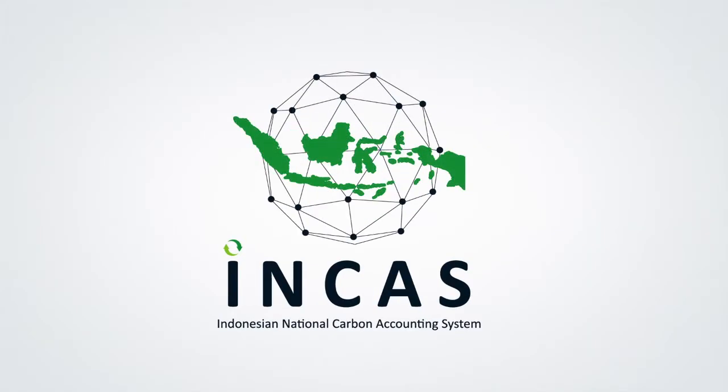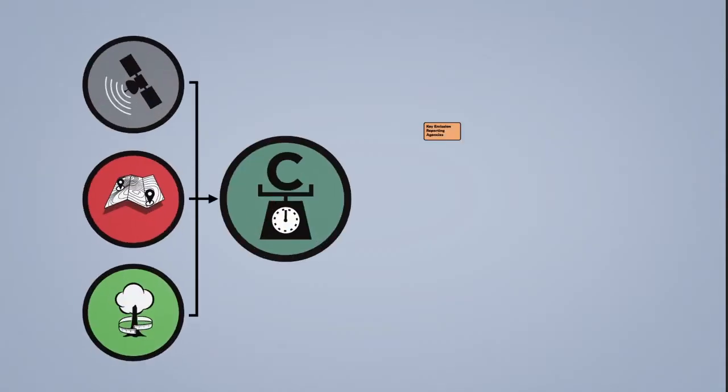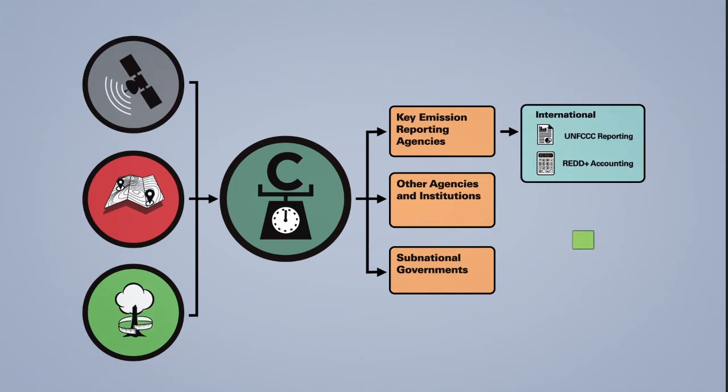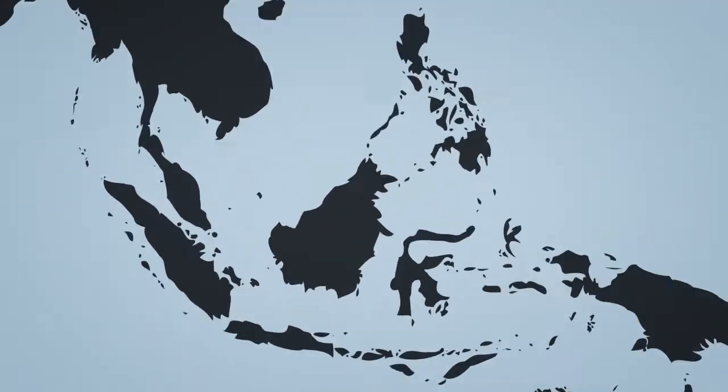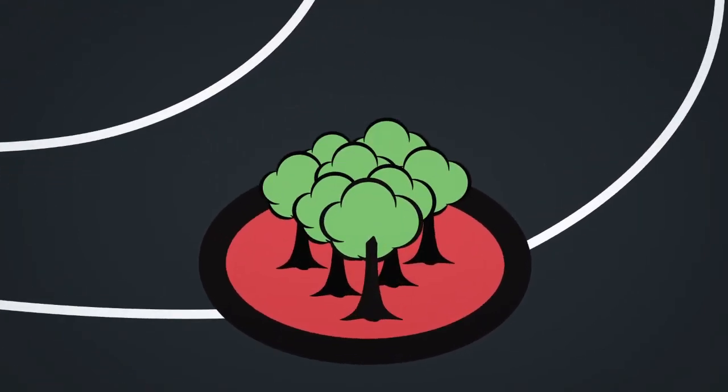The INCUS is a big data platform for monitoring net greenhouse gas emissions in the land sector. It uses a combination of the best available satellite and ground-based forestry data taken from across the entire country.